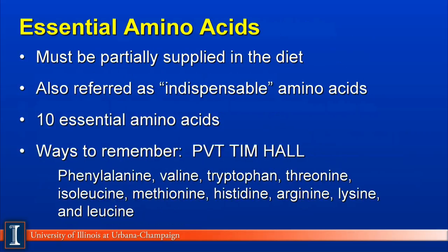Another important concept is essential amino acids. These amino acids must be partially supplied by the diet because animals cannot synthesize them in adequate amounts to maintain their productive function. Another term is indispensable amino acids. There are 10 essential amino acids: phenylalanine, valine, tryptophan, threonine, isoleucine, methionine, histidine, arginine, lysine, and leucine. One way to remember these is the mnemonic 'Private Tim Hall,' where each letter stands for a different amino acid. You must understand why they are called essential or indispensable — they must be provided in the diet.